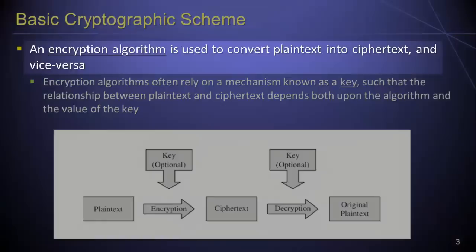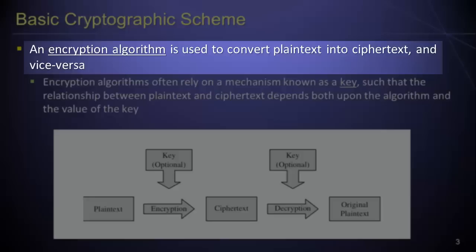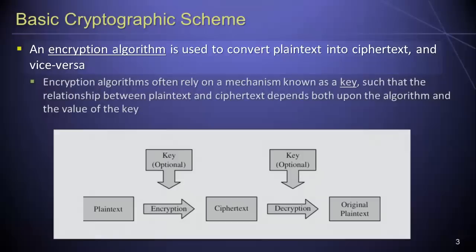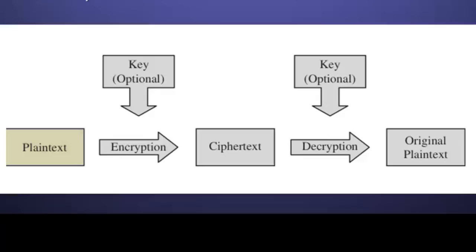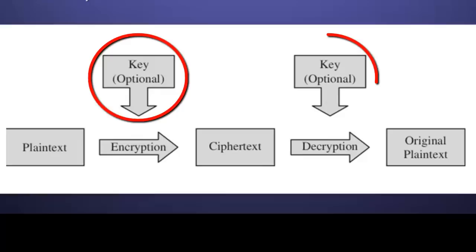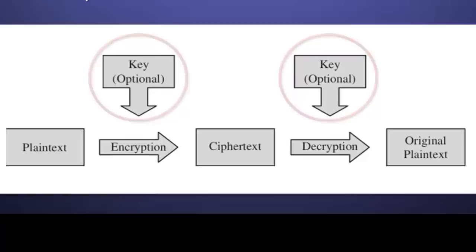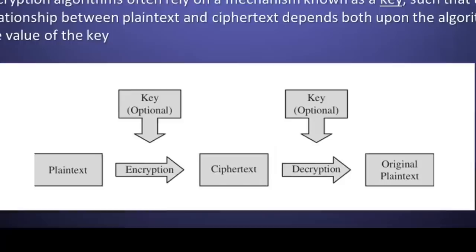An encryption algorithm can be used to convert plaintext into ciphertext, and vice versa. The basic model of cryptography involves protecting a plaintext message by running it through an encryption algorithm, the result of which is an encoded version of the original message. The original unencoded message can then be recovered by running the ciphertext through a decryption algorithm. Note that encryption algorithms often rely on a mechanism known as a key, which can be applied during encryption or decryption, such that the relationship between plaintext and ciphertext depends not only upon the algorithm but also upon the value of the key.